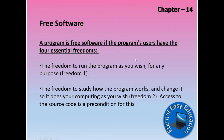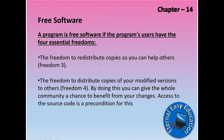A program is free software if its users have four essential freedoms. First, the freedom to run the program as you wish for any purpose. Second, the freedom to study how the program works and change it so it does your computing as you wish — access to the source code is a precondition for this. Third, the freedom to redistribute copies so you can help others. Fourth, the freedom to distribute copies of your modified versions to others, giving the whole community a chance to benefit from your changes — access to the source code is a precondition for this as well.